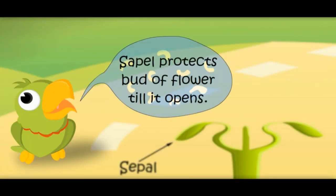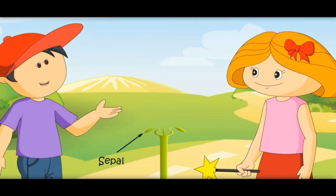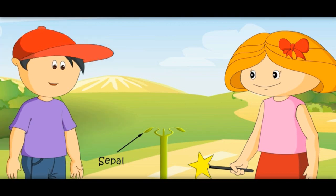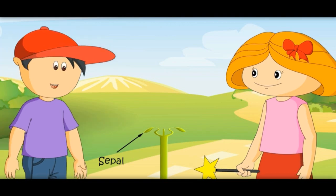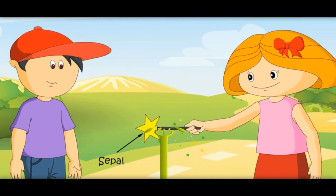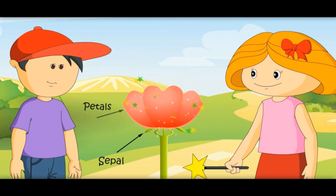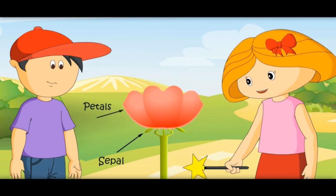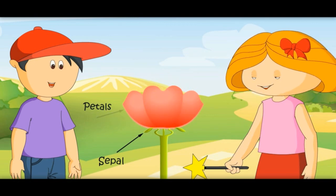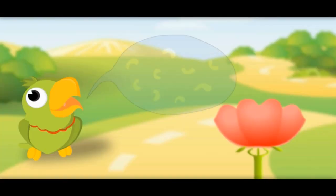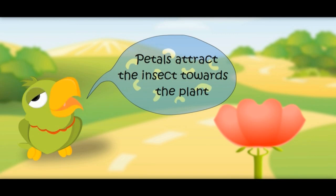Sepals protect the bud till it opens. Now bring petals — the most beautiful part of the flower. Aren't they attractive? Yes, they are. They attract insects towards the plant. Petals attract insects towards a plant.